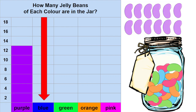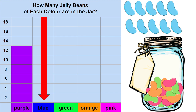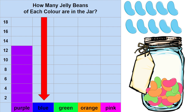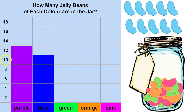Now we're going to find our blue jelly beans from the jar. Count them with me: 2, 4, 6, 8, 10. We're going to find the number 10 on our graph and then we're going to fill in the blue column all the way up to 10. Our graph shows us that we had 12 purple jelly beans in our jar and 10 blue jelly beans.